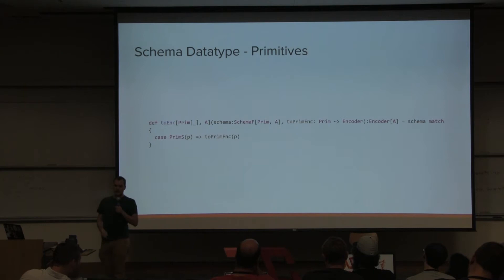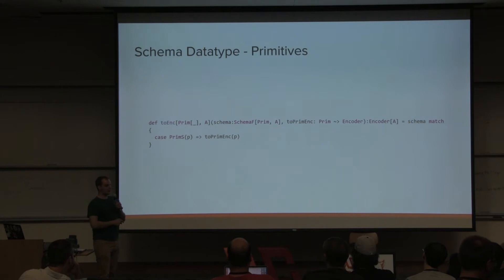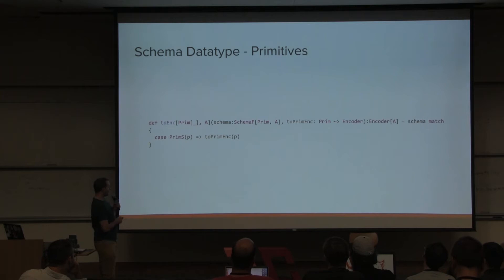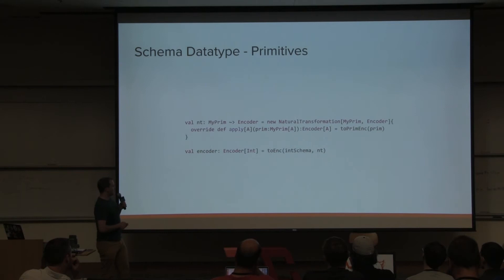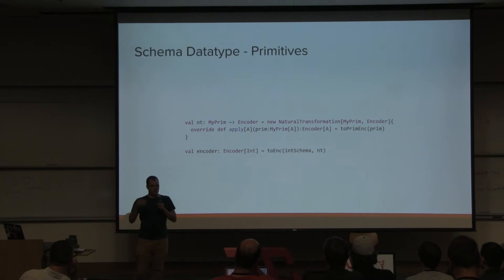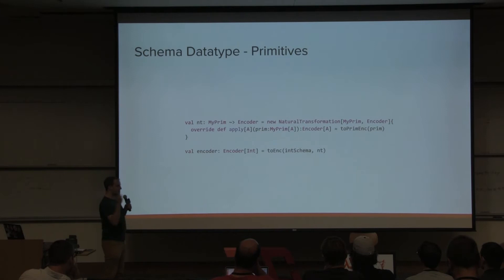To keep our toEncoder function general, since we've introduced this prim type constructor, we have to introduce a corresponding natural transformation — because we don't know what you want to do with your primitives. That's a piece of information the user must supply. To get the actual encoder we unwrap the contained prim, pass it into the natural transformation, and carry on. We can already construct our first schemas — just primitives, but we can get to encoders by wrapping our toEncoder in a natural transformation.